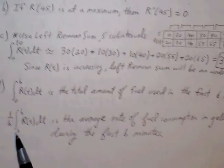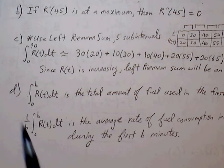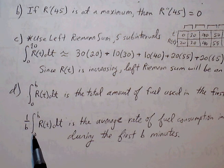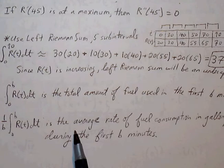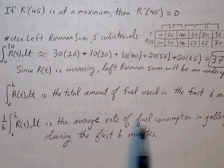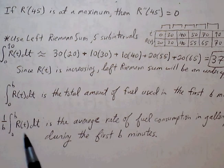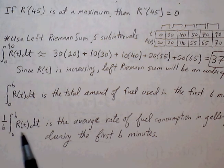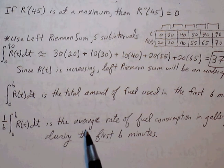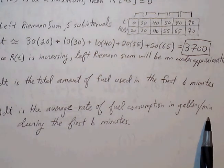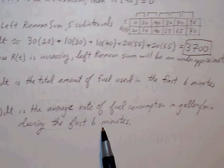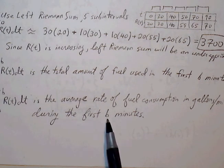If you recognize this as the average value theorem — 1 over B minus A times the definite integral from A to B of R of T dt — then this is simply the average rate of fuel consumption. This will be in gallons per minute during the first B minutes, whatever B value is.